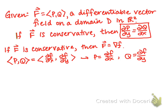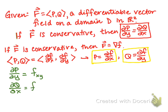If we take the partial derivative of P with respect to y, we get the mixed second derivative F_xy. And if we take the partial derivative of Q with respect to x, we get F_yx, the derivative with respect to x of partial f partial y.